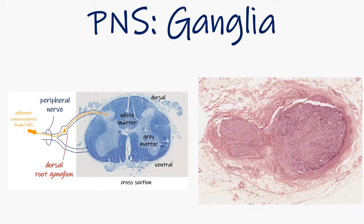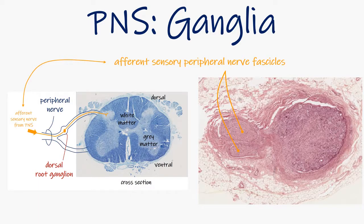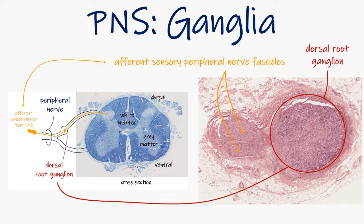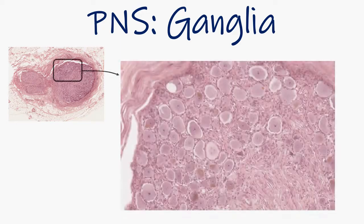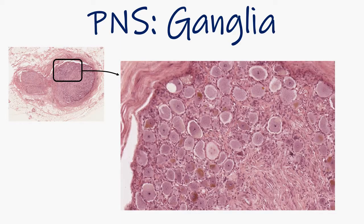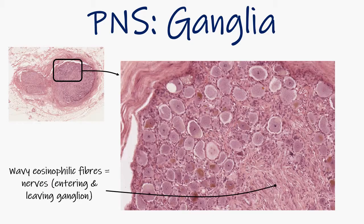Finally, let's take a quick look at what a ganglion, a collection of nerve cell bodies, looks like. If we compare the schematic on the left with the light micrograph on the right, we can see fascicles of afferent sensory nerves entering a dorsal root ganglion, and then we can imagine them synapsing and traveling on to the spinal cord. If we magnify a part of this ganglion, we can clearly see the wavy fibers that are composed of afferent and efferent nerves entering the ganglion, and then we can imagine them synapsing with the beautiful large neuronal cell bodies, a few examples of which are circled here in blue.